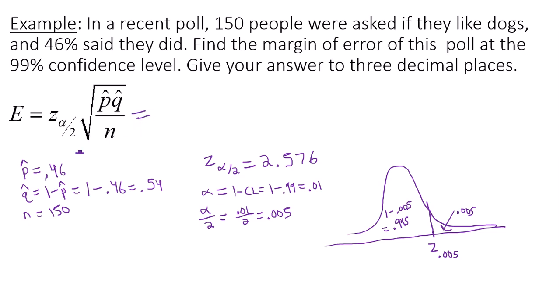My critical value is 2.576. And underneath the radical, I'm going to have 0.46, which is p-hat, times 0.54, which is my q-hat, all divided by the sample size, 150.